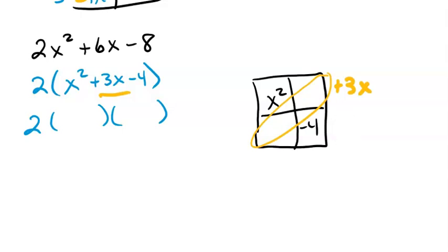So I know to get x squared, I'm going to do x times x, and then to get negative 4, I have some options. I have a negative 1 and positive 4, or negative 2 and positive 2, and obviously the signs could be switched. So I'm going to try minus 1 and positive 4. So negative 1 times x is negative x, positive 4 times x is 4x. Those add to give me positive 3x, which is what I was looking for.